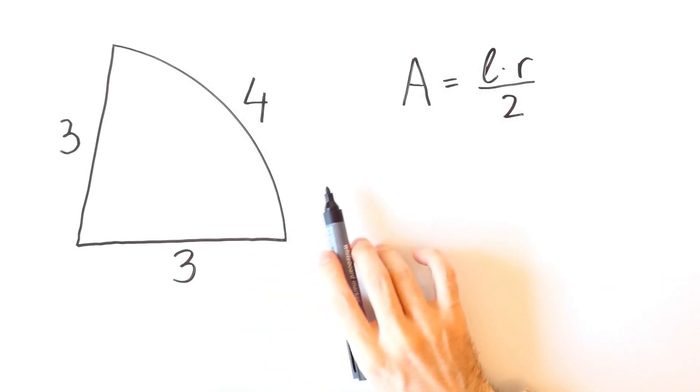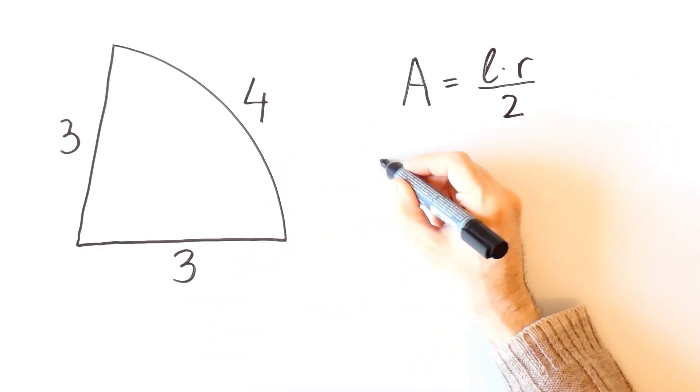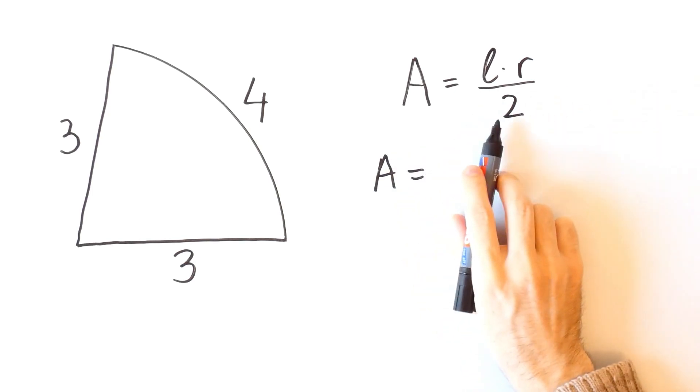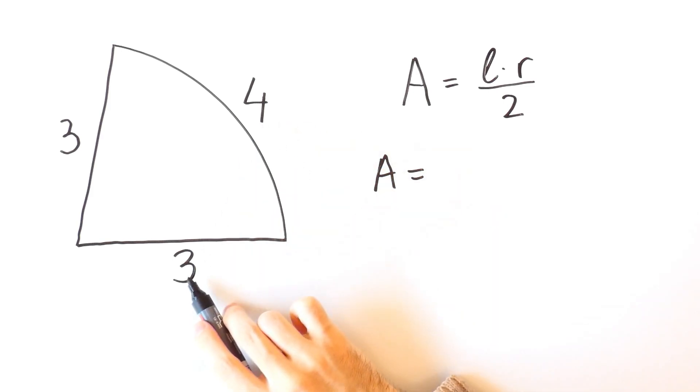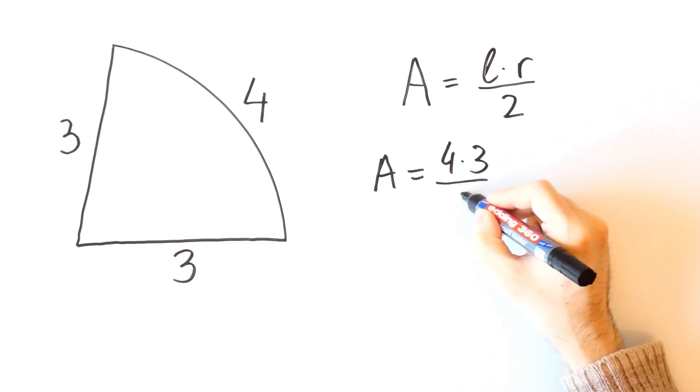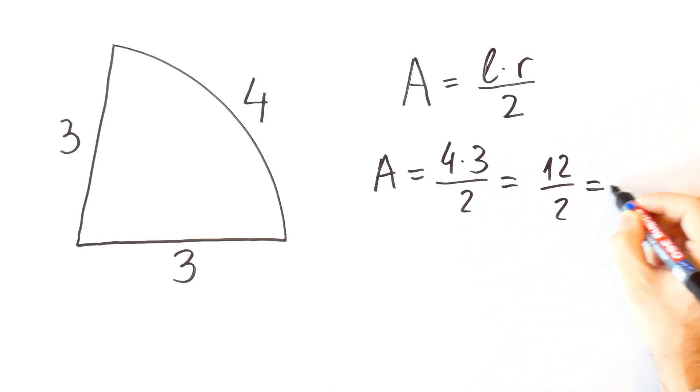Now to solve our initial problem, we just need to put 3 and 4 in the formula. So the area is equal to l times r over 2, and in our case l is 4 and r is 3, so the area is 4 times 3 over 2, which is equal to 12 over 2, and that is equal to 6.